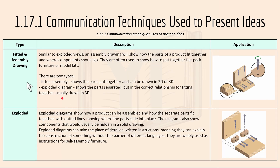Then we have fitted and assembly drawings. An assembly drawing shows how the parts of a product fit together and where components should go. They are often used to show how to put together flat-pack furniture or a model kit. There are two types: a fitted assembly drawing, which shows the parts put together and can be drawn in 2D or 3D, and an exploded diagram, which shows the parts separated. An exploded diagram shows how the product can be assembled and how separate parts fit together, with dotted lines showing where the parts slide into place. It also shows components that would usually be hidden in a solid drawing.